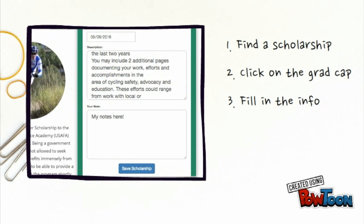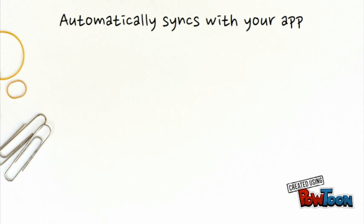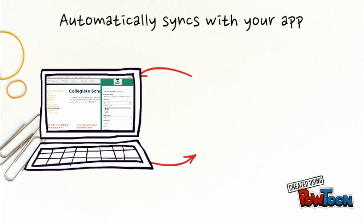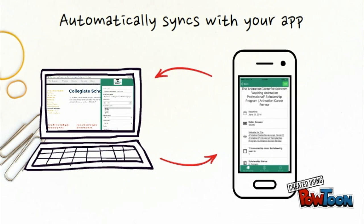Now, if you highlighted any information on the page, it'll auto-populate in the description, and then there's a space for notes. Once you're done, you can hit save and it'll automatically sync with your app.